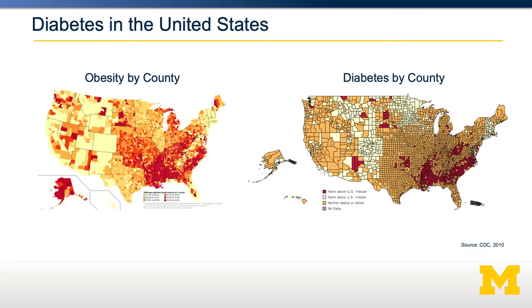Another way to look at this is to examine the incidence of diabetes and obesity by geography. Shown here are two graphs provided by the CDC. You can see obesity rates broken down by county, with red counties on the left having higher obesity rates. In the graph on the right, you can see diabetes rates by county, again with red indicating higher diabetes rates.